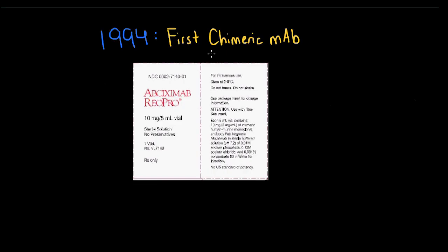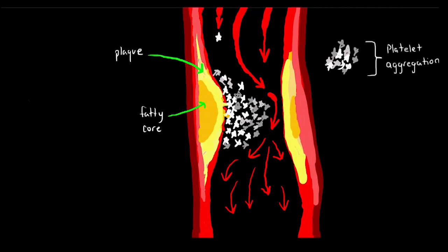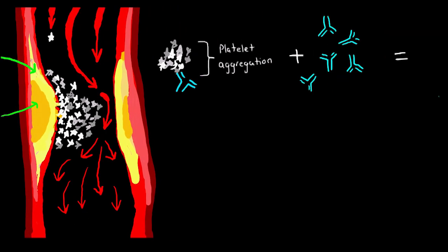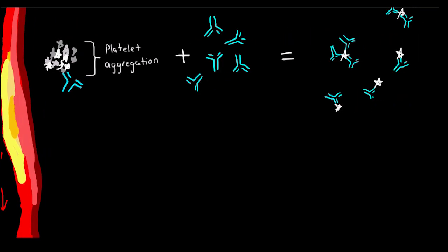In 1994, the first chimeric monoclonal antibody drug was approved, called abciximab, with the trade name ReoPro. ReoPro binds to intact platelet receptors that are involved in platelet aggregation, which prevents coagulation. ReoPro is considered a blood thinner that helps prevent thrombosis and myocardial ischemia, which occurs when blood flow is blocked by plaque.